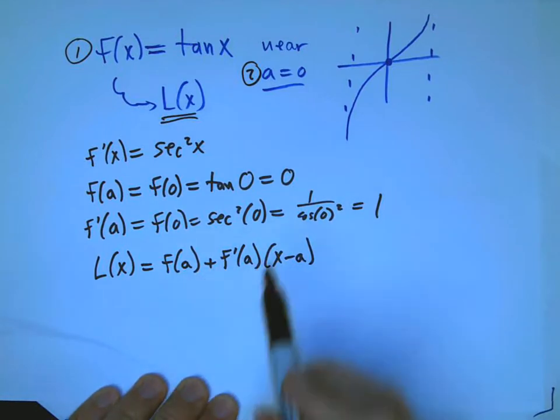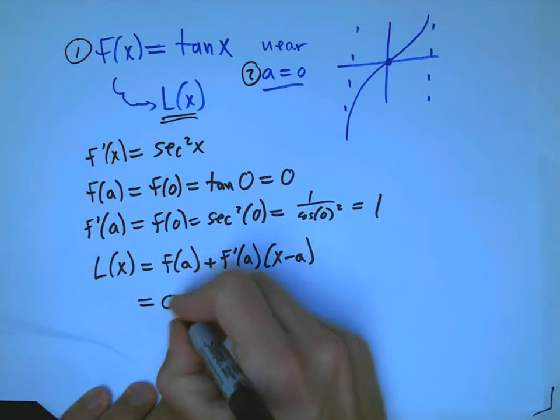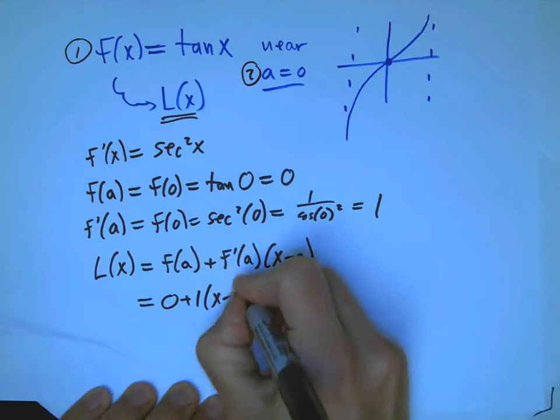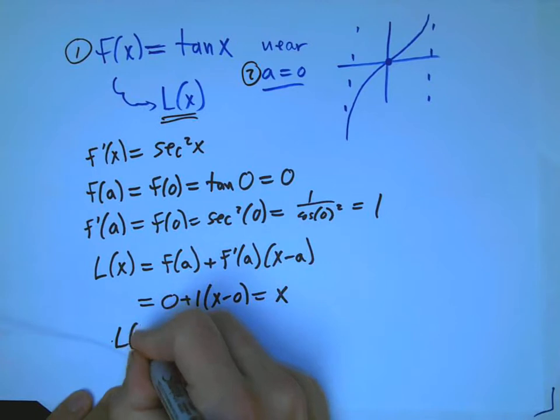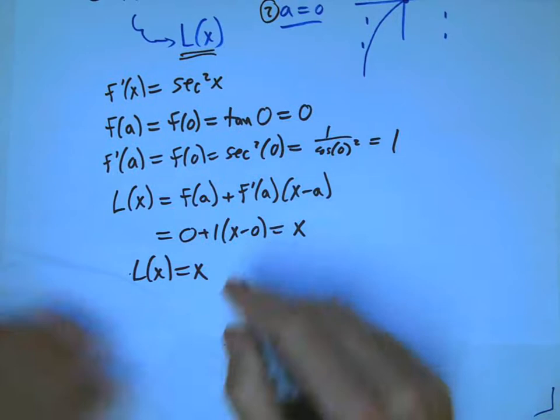So, there's our linear approximation. Or in other words, tan x is approximately equal to x itself. For x near 0, or another way to say that, is small x. That is a super handy thing to know.